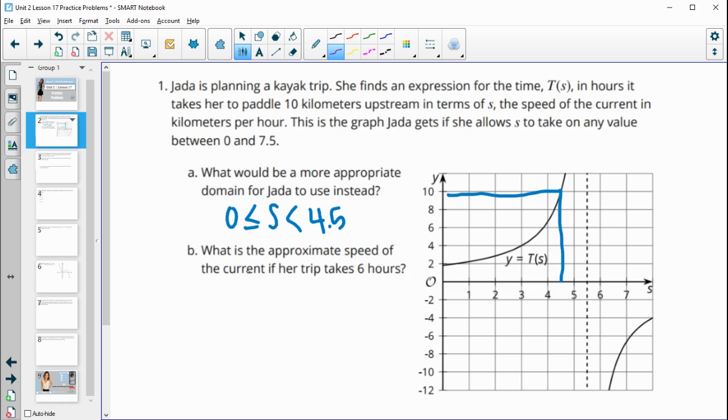So then what is the approximate speed of the current if her trip takes six hours? So that's going to be our Y value. So her trip is taking six hours. So let's follow that over to the graph. We see it hit the graph here. So then we'll follow this down to our speed and that's going to be close to four. So her speed is maybe like 3.8 kilometers per hour.